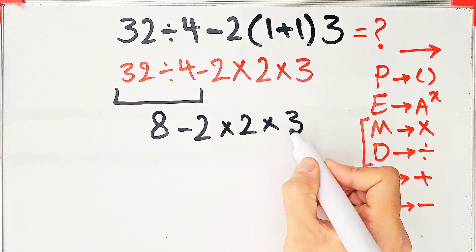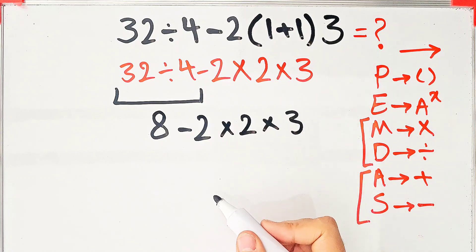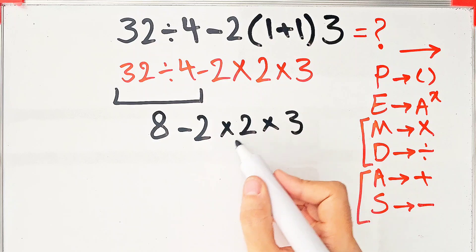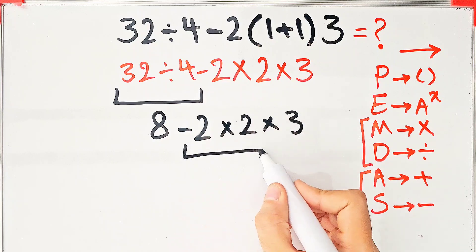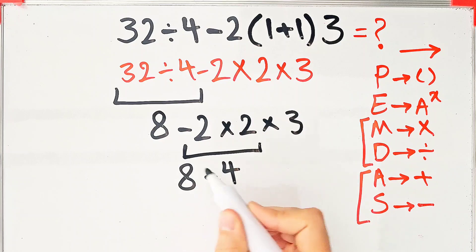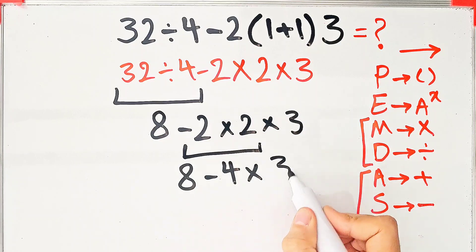Now we have subtraction and multiplication. First we have 2 times 2 which equals 4. The question is 8 minus 4, then times 3.